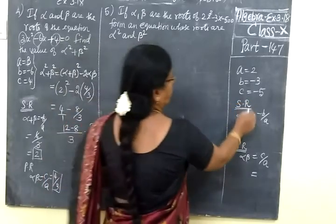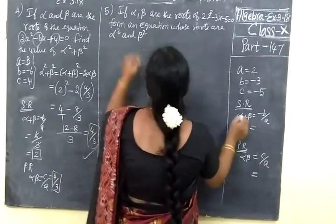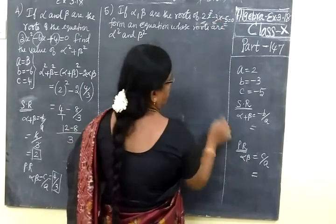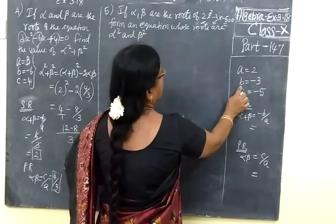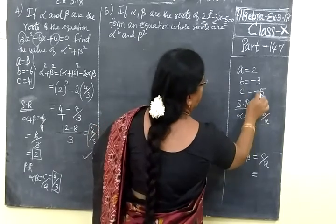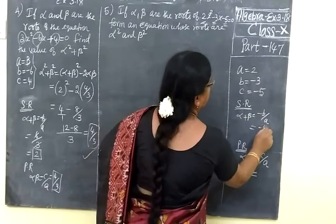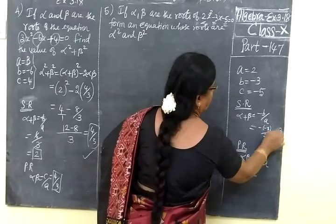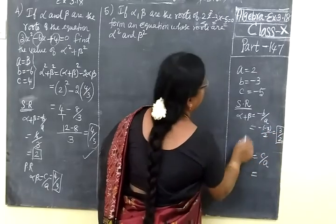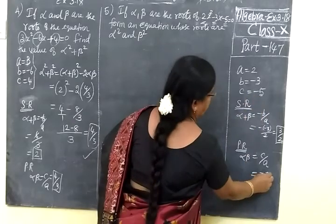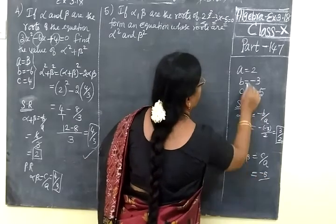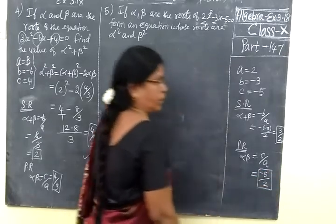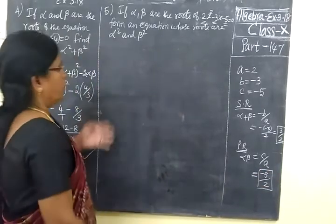So this is A, B, C. A is 2, B is minus 3, C is minus 5. So alpha plus beta equals minus B by A. So this is minus of minus 3 by 2. So 3 by 2. Then product of roots C by A. C is minus 5 by A and A is 2. So minus 5 by 2.